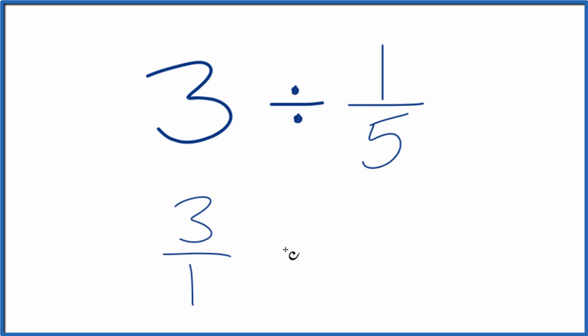And instead of division, we're going to multiply by the reciprocal of 1 fifth. And to get the reciprocal, you move the numerator to the bottom, the denominator to the top. So we're going to have 3 over 1 times 5 over 1.